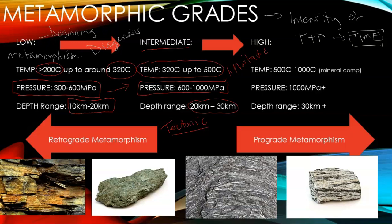A low grade example is slate. The intermediate going between each grade is going to be phyllite. You're seeing the change in mineral alignment, the coarseness, the size of minerals, and also the start of foliation. That's dependent on the type of metamorphism that we encounter.